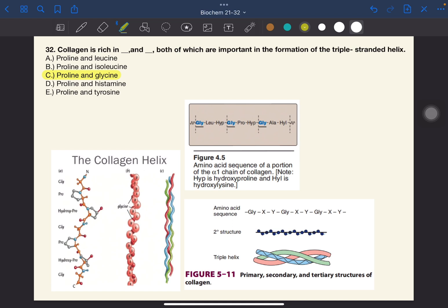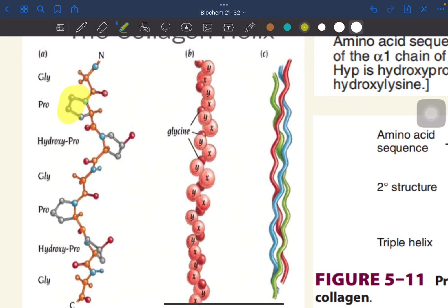Collagen is rich in proline and glycine. As you can see here, proline facilitates the formation of the helical conformation of each alpha chain because its ring structure causes kinks in the peptide chain. Glycine, which is the smallest amino acid, is found in every third position of the polypeptide chain. They're very small and they fit into the restricted spaces where the three chains of the helix come together.